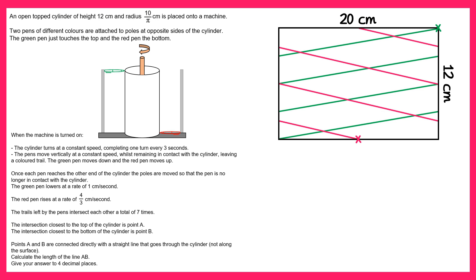Next we need to find the intersection point closest to the top of the cylinder and the one closest to the bottom. The one closest to the top will be A, so this one here, and the one closest to the bottom will be B, so this one here. Then we're told that the points A and B are going to be connected directly with a straight line that goes through the cylinder, so not along the surface, and we need to calculate its length. In order to work this out we're going to work on the surface of the cylinder first though.